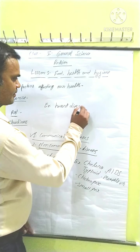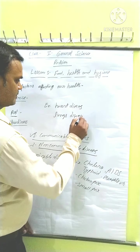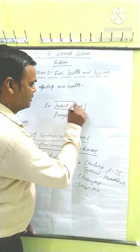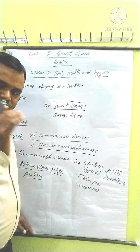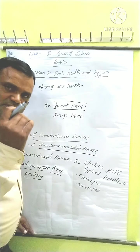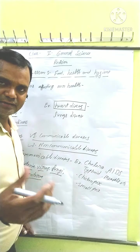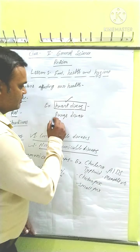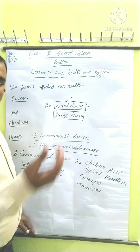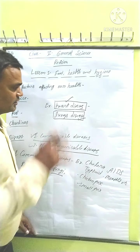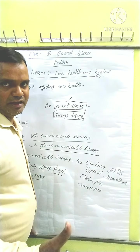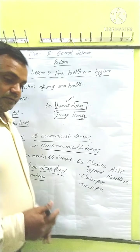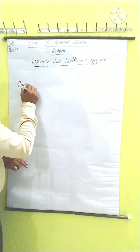Examples of non-communicable diseases include heart disease, lung disease, and other disorders caused by bad habits. Heart disease may occur if you do not take a proper diet — for example, if you consume excess junk food, fats, or carbohydrates. Lung disease can occur if you have bad habits like smoking. These diseases do not spread from one person to another, which is why they are called non-communicable diseases.